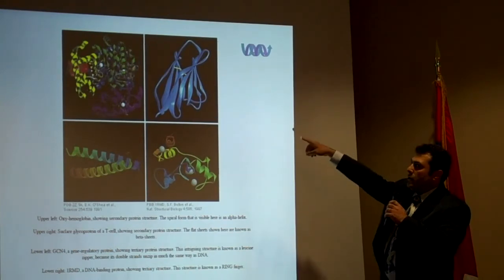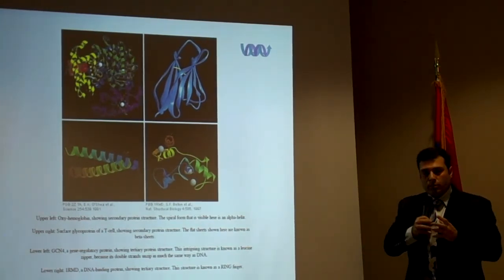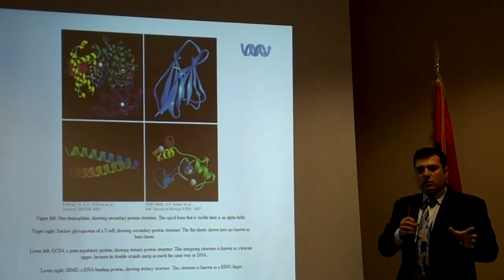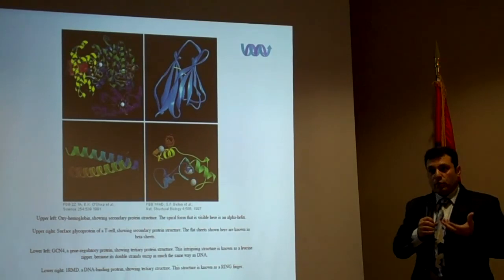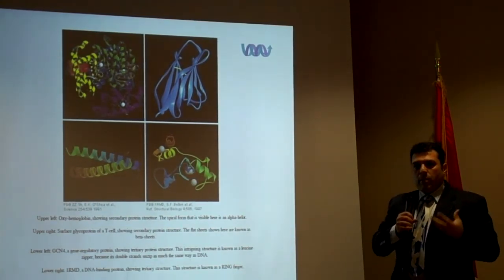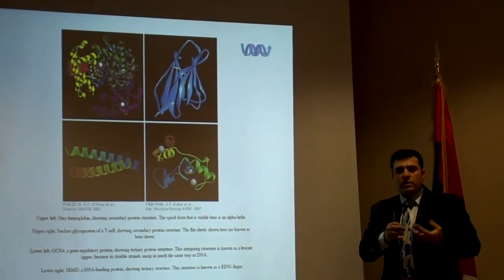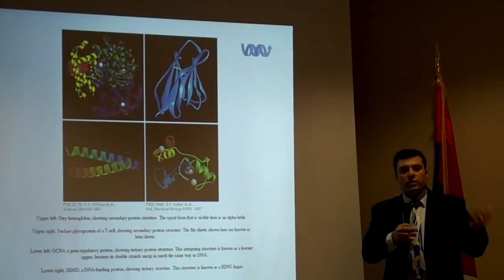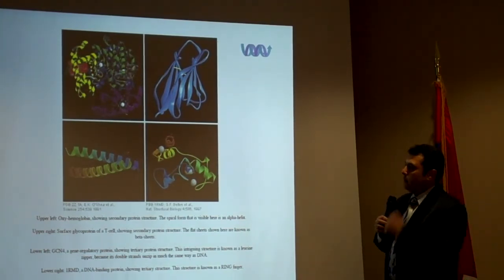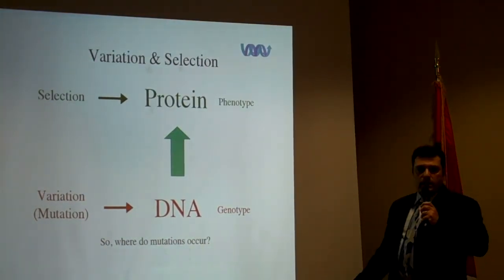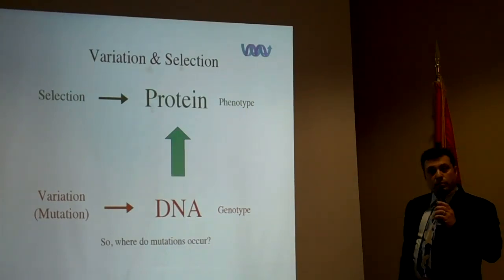Proteins come in different shapes and styles: we have the beta sheet, the alpha helix, secondary structure, tertiary structure, and quaternary structure, which is a combination of proteins. It gets very complicated — a couple of scientists received a Nobel Prize just for showing the tertiary structure of proteins by crystallizing them. That's why bioinformatics is so important: using computer programs we can predict tertiary and quaternary protein structures rather than performing laborious lab work. Variation occurs at the DNA level, and selection occurs at the protein level.